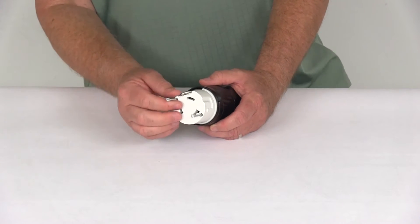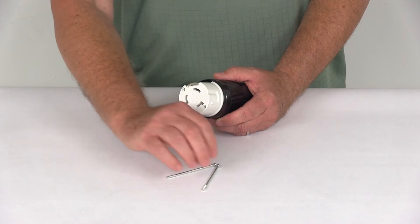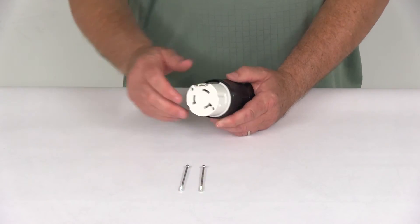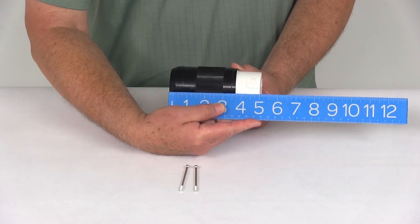Now this is designed to be used with a threaded ring cover that we do sell separately on our website. It's part number A10-50CV. Just to give you an idea of the length of this connector from end to end, it's going to be right at five inches long.